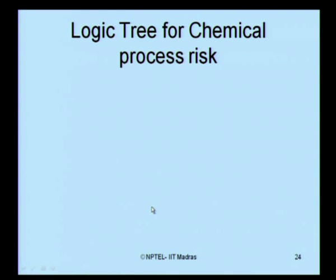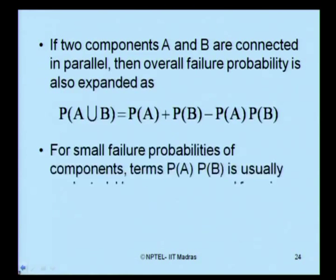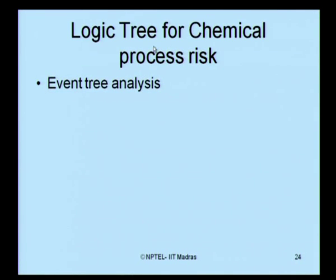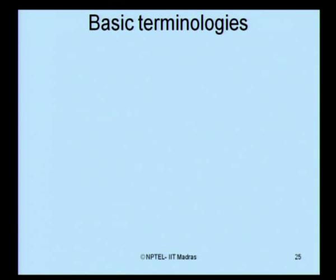Now let us look at expressing the failure phenomena for chemical process risk. If you want to do the probabilistic risk analysis expression for chemical process risks, we generally use what we call a logic tree. Logic trees can be of two types: event tree analysis and fault tree analysis. Before we look at event tree and fault tree analysis in detail with examples, let us first try to understand some basic terminologies in logic tree analysis.